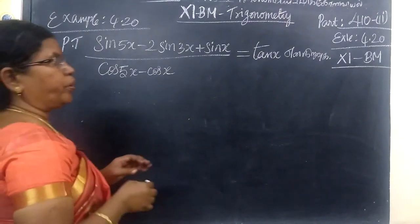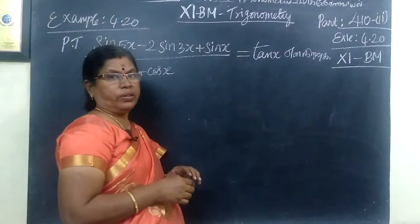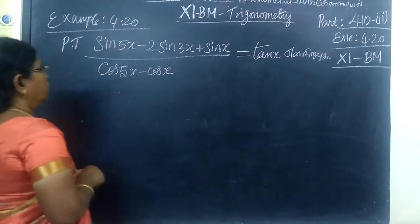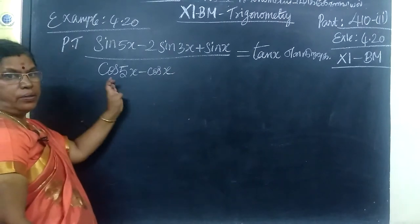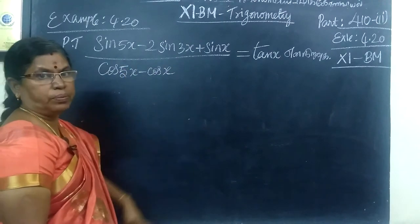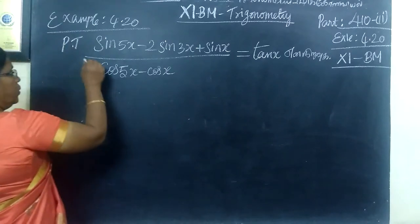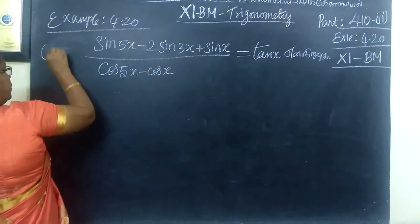Now, Example 4.20, 11th Business Math. You are given this to be tan x. LHS is the RHS is tan x to be proved. For that, you consider this one.